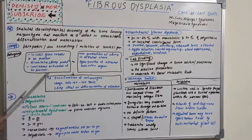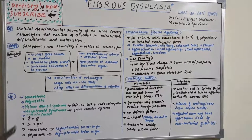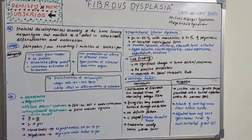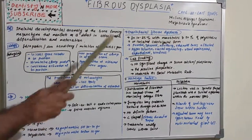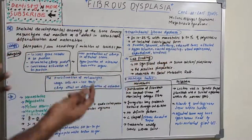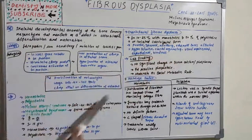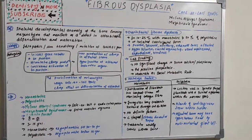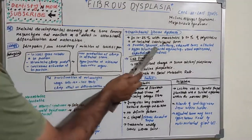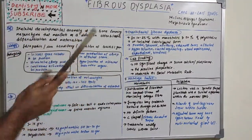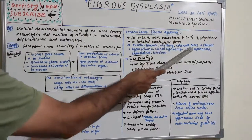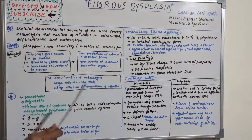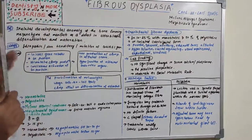An additional type is craniofacial fibrous dysplasia, seen in 10–25% of monostotic cases and 50% of polyostotic cases. It may also appear as an isolated craniofacial form restricted to craniofacial structures. Bones affected include the frontal, sphenoid, maxillary, and ethmoid bones. Clinical features include hypertelorism, cranial asymmetry, visual impairment, exophthalmos, and blindness.